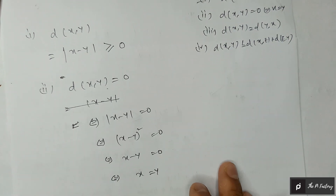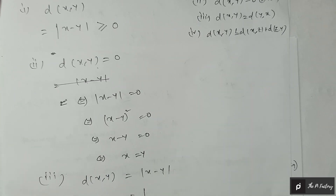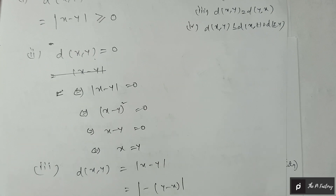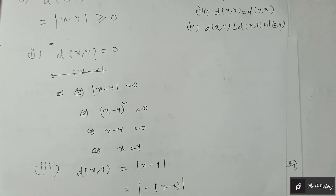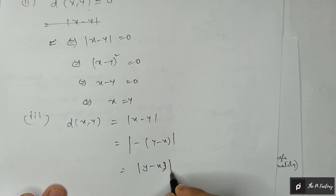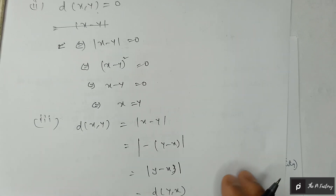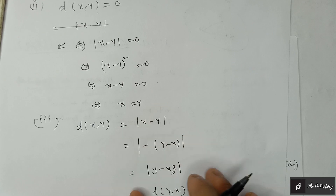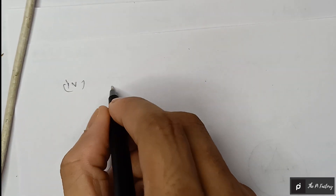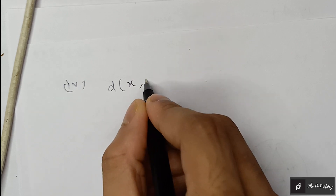Now for the third condition: taking the minus sign common, we can show that d(x, y) = |x − y| = |y − x| = d(y, x). Hence we have proved the symmetry condition.